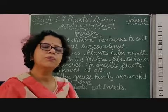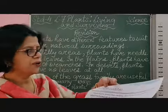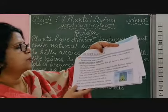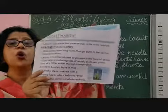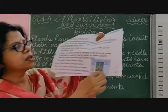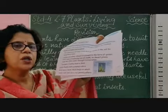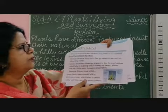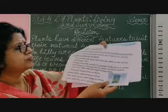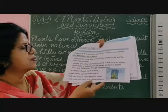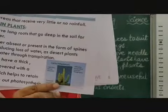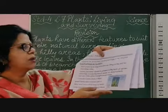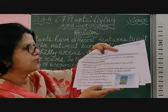Coming to the plants that grow in the desert area, they are totally different from hilly area plants. Because there is very less rainfall, due to this adaptation, they have very long roots. These long roots go deep under the ground to bring water, because they need water to prepare food. They don't have leaves — leaves are absent — and they have spines, which help them retain water.